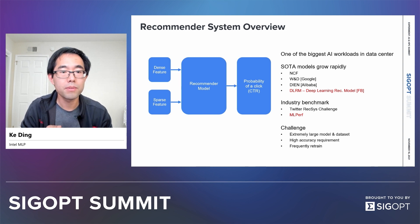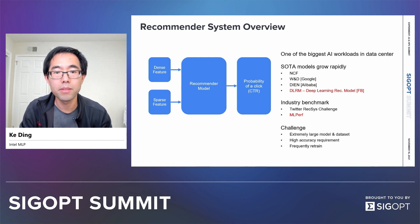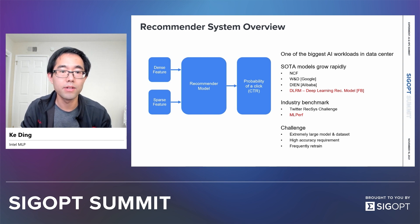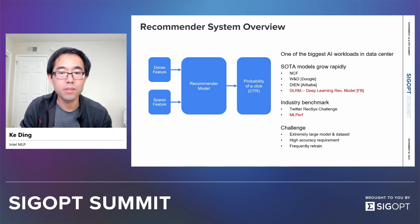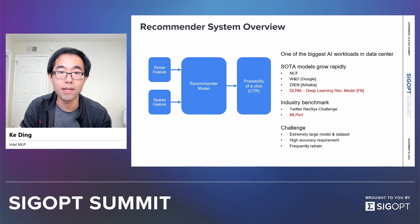With both dense and sparse features as input, they pass through the recommendation models and generate an output. The most commonly used output of the recommendation system is the probability of a click, also called CTR, click-through rate. It indicates, with all the dense and sparse context features presented, whether the user will end up accepting the recommendation or not.